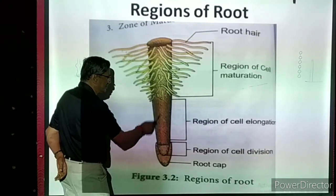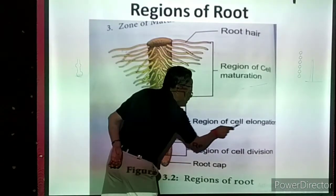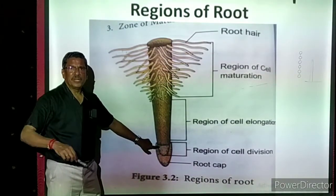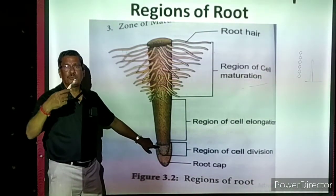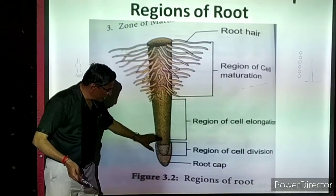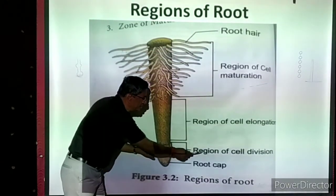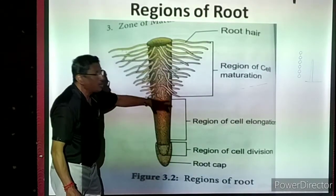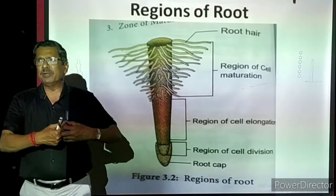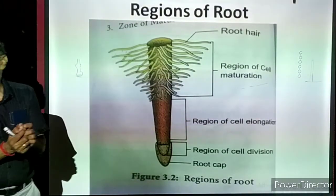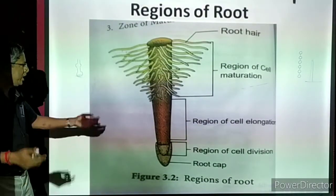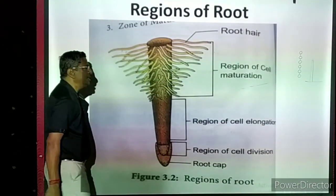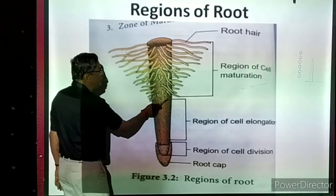Above the meristem, there is a long wide region called the region of cell elongation. Out of the multiplied cells, some remain in the region of cell division, while the remaining cells move up and elongate — they become longer and longer. So the root grows longer and longer; that is called the region of cell elongation.